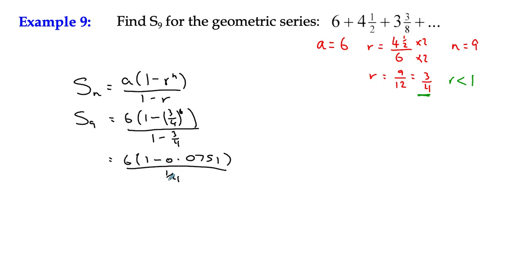So I could divide 6 divided by a quarter is the same as 6 times 4. So that's 24 multiplied by 1 minus 0.0751. It works out as 0.9249. And if I multiply those together, I get 22.198 to three decimal places.